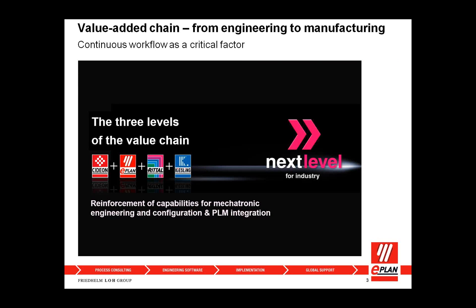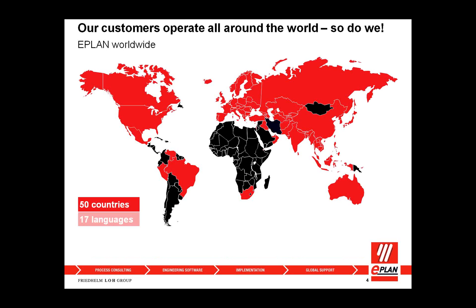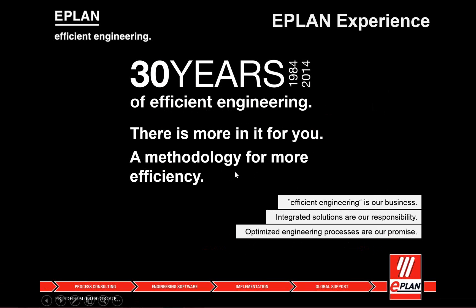We have three or four companies that are part of our overall parent company: Cition, which develops some of the electromechanical interfaces to SAP; ePlan, which is our division; Rittal, which makes electromechanical closures; and Kiesling, which makes the manufacturing machines for wiring and panel cutting.